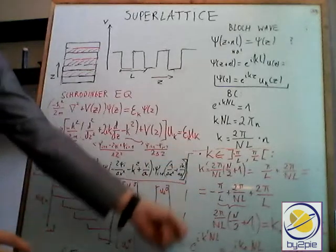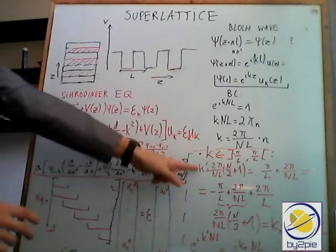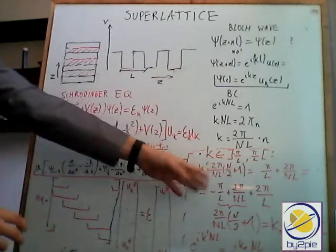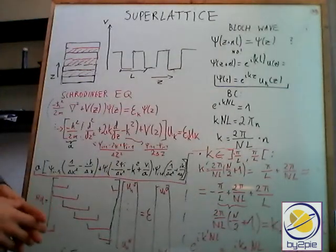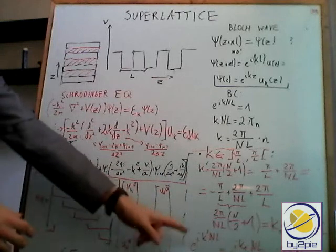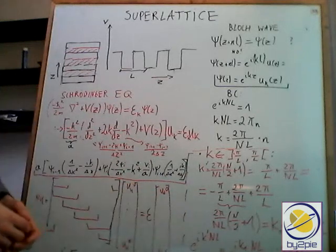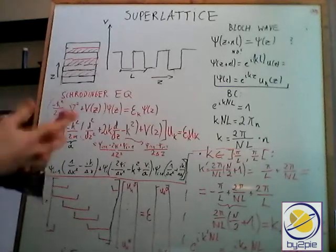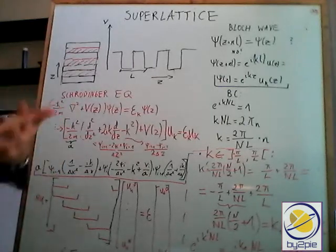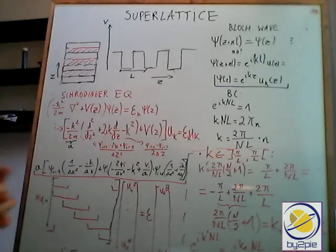And how it's proven: even if you take a k' being n/(2L) plus 1, so we are slightly out of this Brillouin zone, we end up with a vector within the Brillouin zone times 1. So you can limit yourself to the Brillouin zone and it will work in this example.